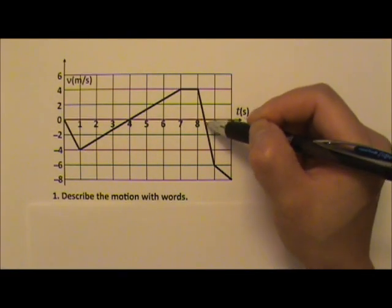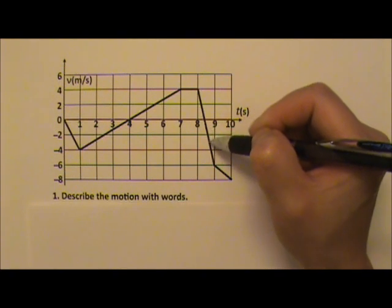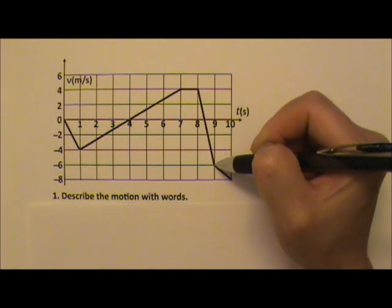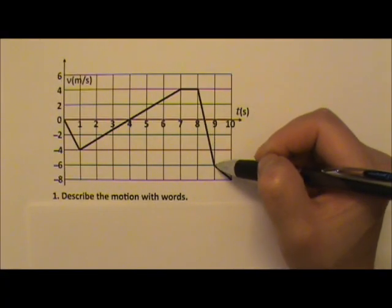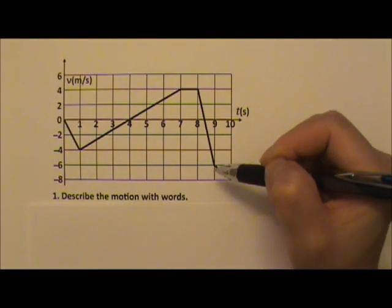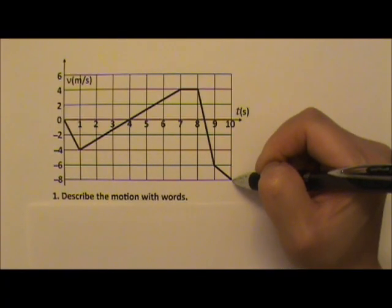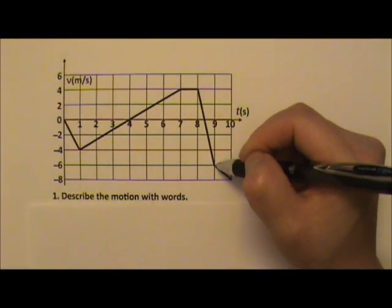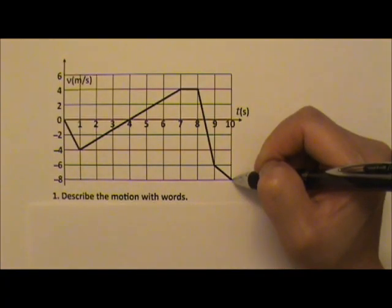And then it turns around because its velocity then turns negative. It speeds up from rest — 0 meters per second to 6 meters per second — traveling in the negative x direction. And then it speeds up at a slower rate from negative 6 meters per second to negative 8 meters per second.